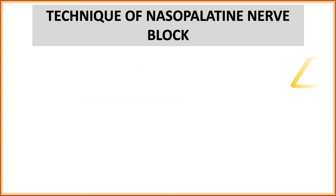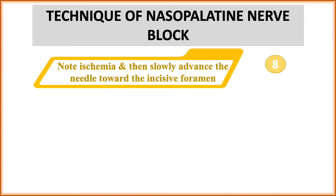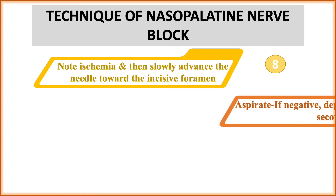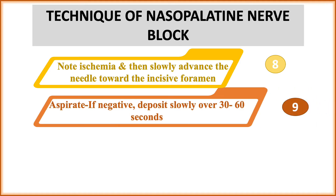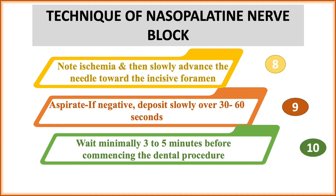Take a swab and apply pressure to the area of the papilla; note ischemia, then slowly advance the needle towards the foramen. Apply pressure with the finger and note the blanching or ischemia. Aspirate — if negative, then only deposit the solution slowly. Wait a minimum of three to five minutes before starting the procedure.